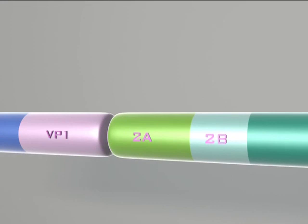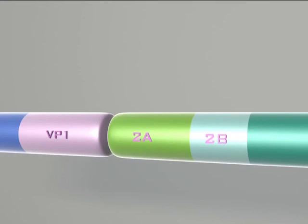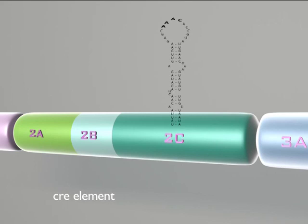Another important RNA structure worth looking at is found in the P2 region. This is a cis-acting replication element, or CRE for short, and it will play an important role during replication.